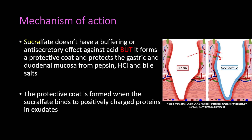Sucralfate is used as an anti-ulcer medication for treatment of peptic ulcer disease. Ulcers are caused by the acid — either by over-secretion of the acid or a decrease in the mucus protecting the stomach from the acid. We already have medications that buffer the acid like the antacids, and medications that have anti-secretory effects like the H2 blockers and the proton pump inhibitors.